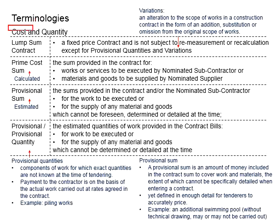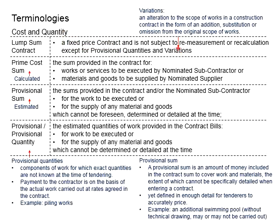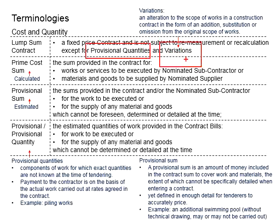Let us look at the terminology related to cost and quantities. We have the lump sum contract. This is basically a fixed price contract which is not subjected to remeasurements or recalculations, except for the provisional quantities and the variations. The meaning of lump sum here is that the contract has a fixed price as recognized by both the contractor and the employer.